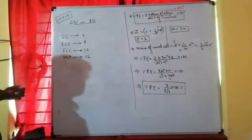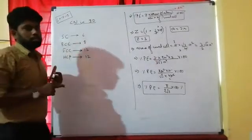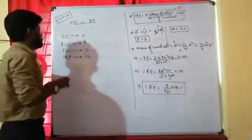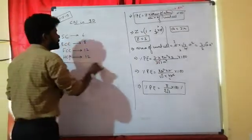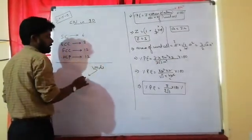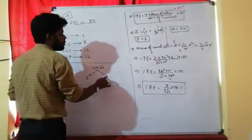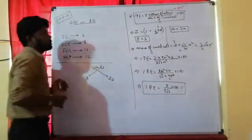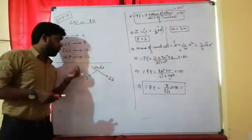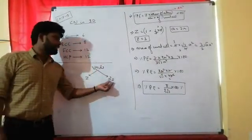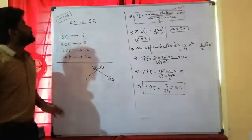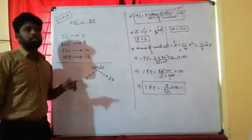We have already studied coordination number in 1D, 2D, and 3D. In the next video we are going to cover two types of voids: octahedral voids and tetrahedral voids, where tetrahedral voids = 2Z. This is very important and will be covered in the next video.